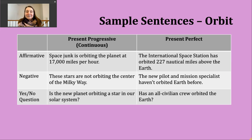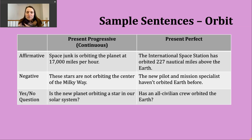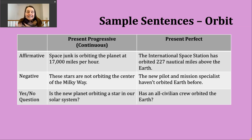Here's an affirmative example: the International Space Station has orbited 227 nautical miles above Earth. This describes something that started in the past and continues today — it's still ongoing.